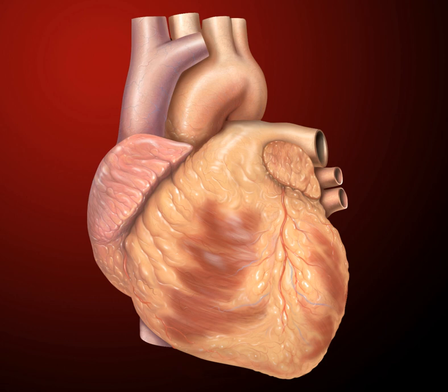Diseased heart valves that have become abnormally narrow or abnormally leaky may require surgery. This is traditionally performed as an open surgical procedure to replace the damaged heart valve with a tissue or metallic prosthetic valve. In some circumstances, the tricuspid or mitral valves can be repaired surgically, avoiding the need for a valve replacement. Heart valves can also be treated percutaneously, using techniques that share many similarities with percutaneous coronary intervention.